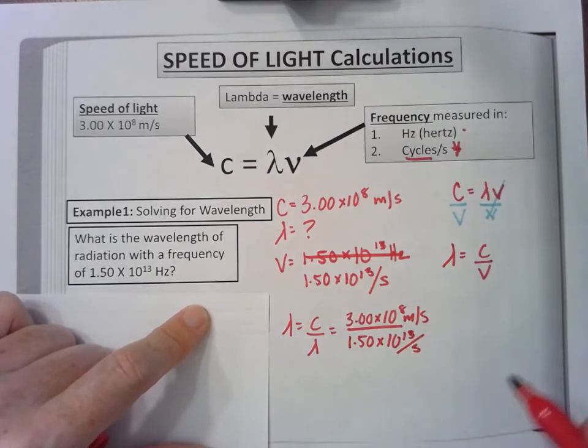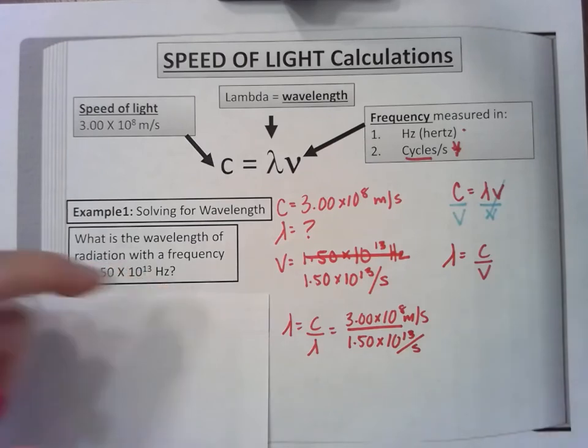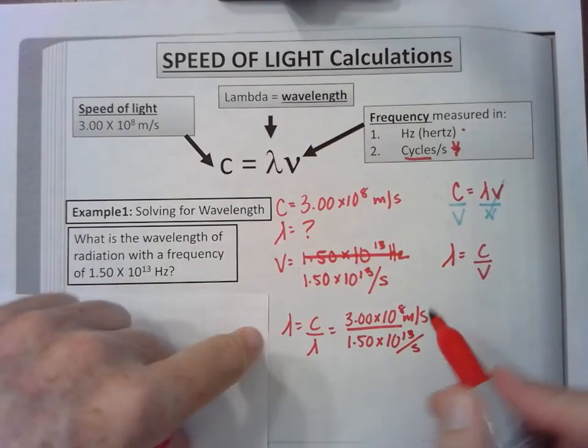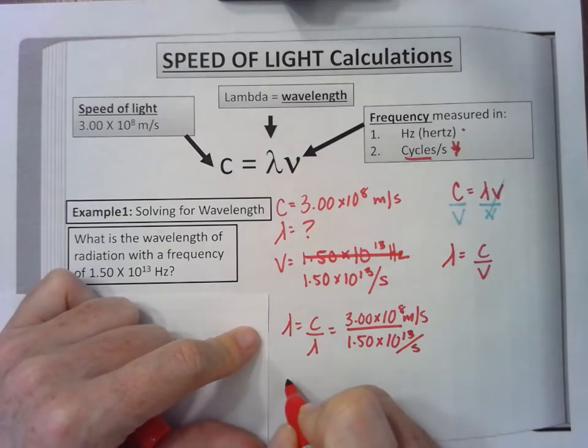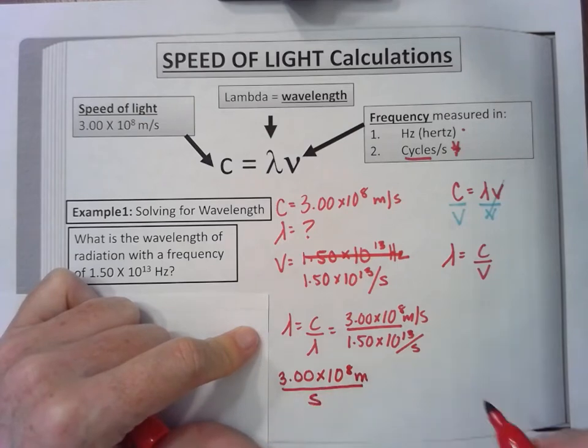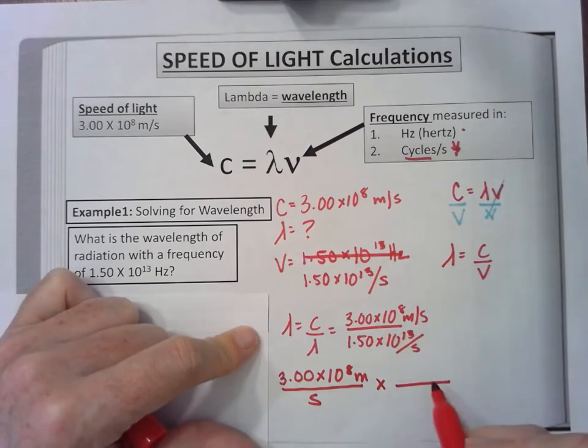So I'm going to take the speed of light, 3.00 times 10 to the 8 meters per second, and multiply it by the reciprocal of the frequency. Seconds is on the bottom, so it goes on top, and the 1.50 times 10 to the 13th goes on bottom.